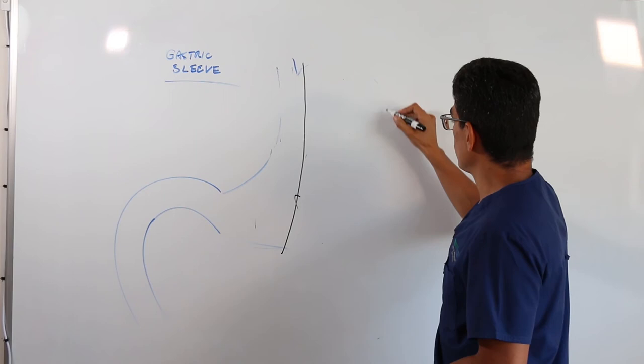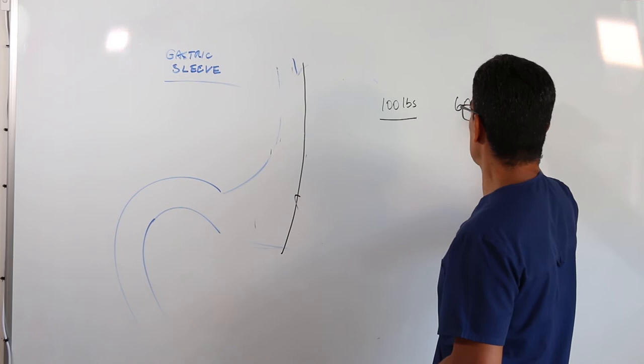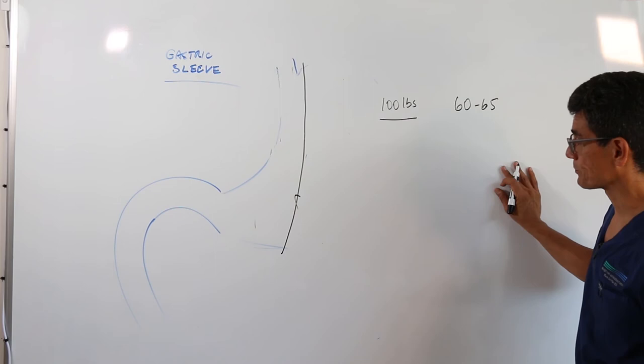So how much weight can you expect to lose? If you're 100 pounds overweight, on average, a sleeve gastrectomy patient loses between 60 and 65 pounds. Some people lose more, some people lose less.